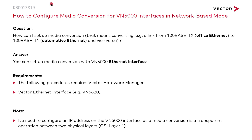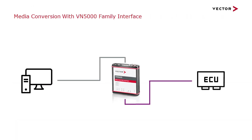Hello, I'm Kedar Khanulkar from Vector. In this video, we'll be talking about how we can perform a media conversion using a Vector Ethernet interface. Media conversion essentially means converting a link from 100-base TX, which is called the Office Ethernet, to Automotive Ethernet, which is 100-base T1.